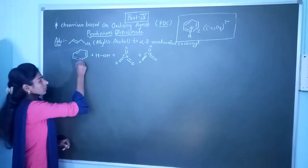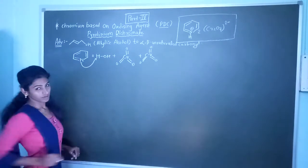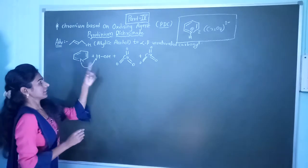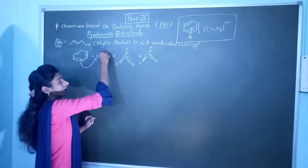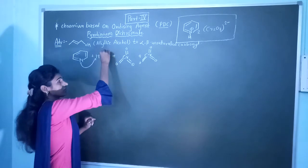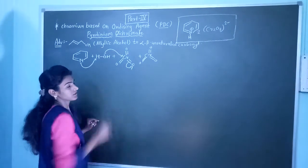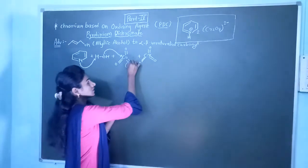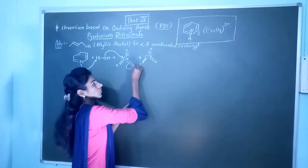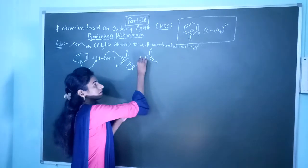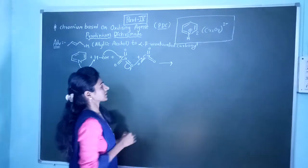Nitrogen has a lone pair. The lone pair of nitrogen will abstract the hydrogen atom first, and then OH⁻ is liberated. This OH⁻ attacks on the chromium atom and it becomes O⁻. This OH⁻ will then attack over the next chromium atom and our reagent is prepared.